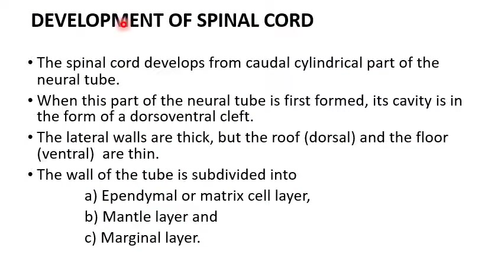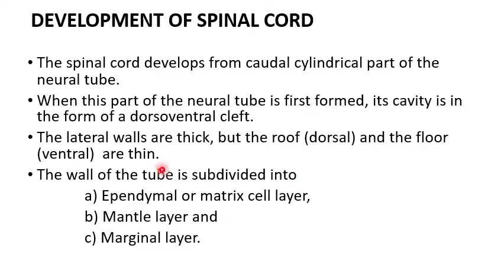Development of the spinal cord: the spinal cord develops from the caudal cylindrical part of the neural tube. When first formed, its cavity is in the form of a dorsal-ventral cleft with two lateral walls, one roof, and one floor. The lateral walls are thick, but the roof (dorsal wall) and floor (ventral wall) are thin. The wall of the neural tube is subdivided into three layers: the ependymal or matrix cell layer, the mantle layer, and the marginal layer.